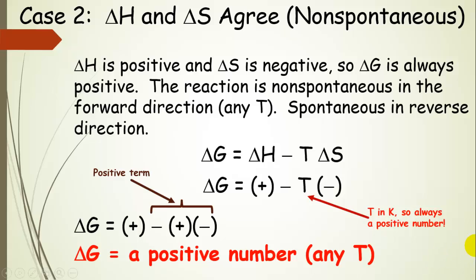Now what about the situation where delta H and delta S agree in the other way? We have an endothermic reaction where delta H is positive, and the entropy decreases, so delta S is negative. The free energy is always positive — the reaction is non-spontaneous in the forward direction at any temperature. Looking at the signs: we have positive delta H and we subtract a positive times a negative, which gives a positive contribution. No matter how high the temperature, we end up with a positive delta G. It is, of course, spontaneous in the reverse direction.